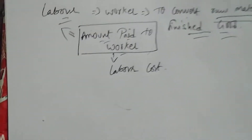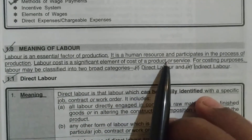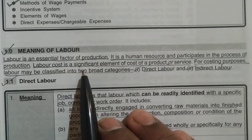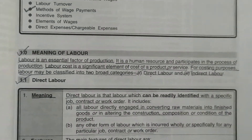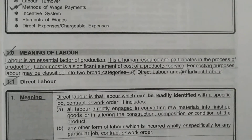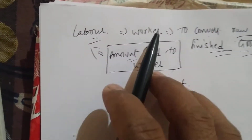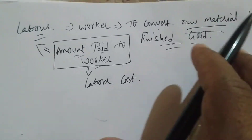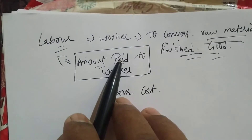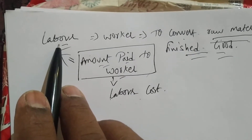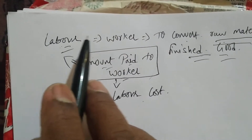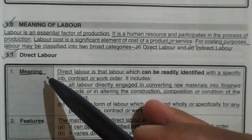That amount paid to the worker is called labor cost. For costing purposes, labor may be classified into two broad categories: direct labor and indirect labor. Labor is a human being who participates in production of goods and services, and the amount paid to the worker for his services and hard efforts is called labor cost.